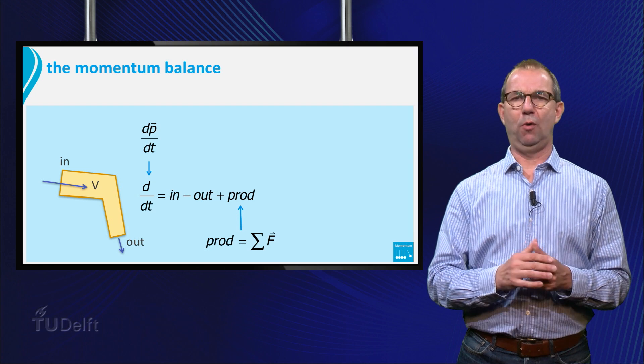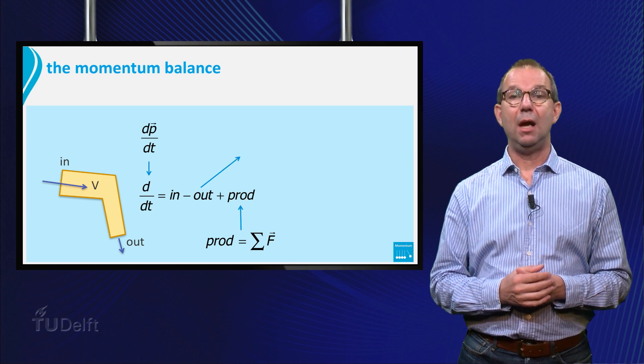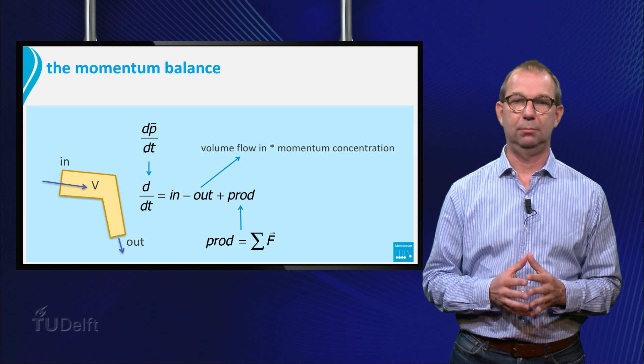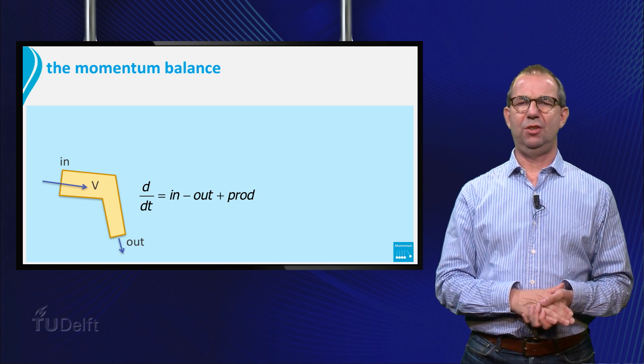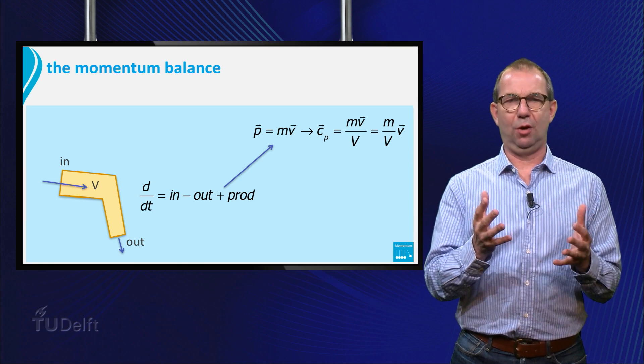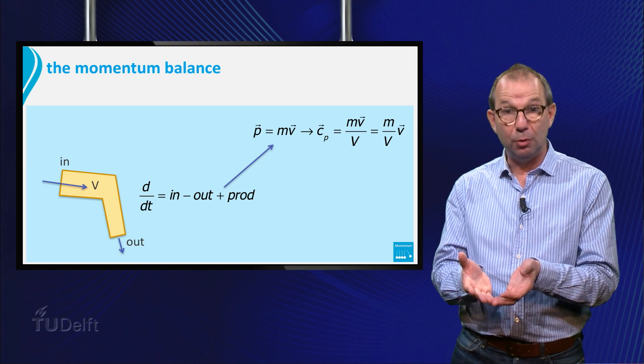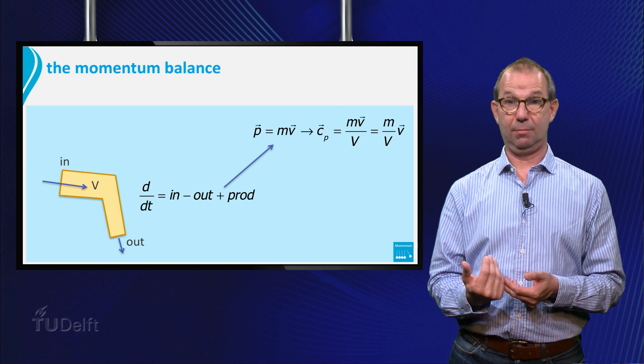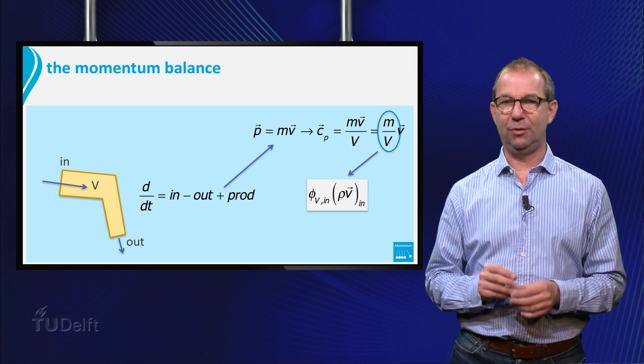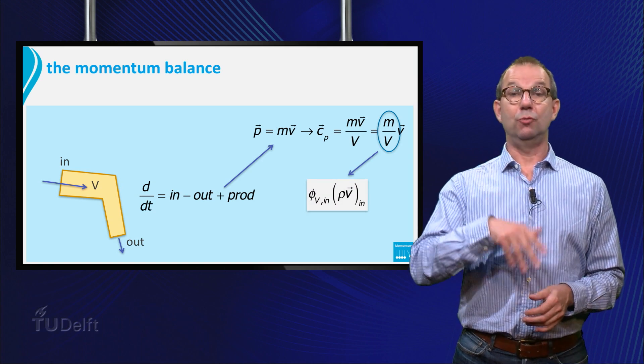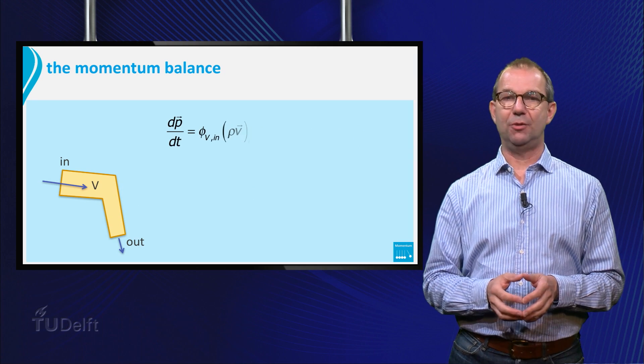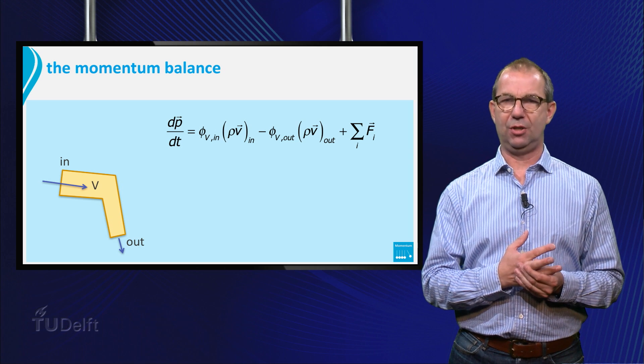How to model the in and out flow of momentum? In the usual way. That is, as a volume flow in times the concentration of momentum in the inflow. Hmm, concentration of momentum, what might that be? Momentum is mass times velocity. So concentration of momentum is momentum per unit volume, so mass over volume times velocity. But mass over volume is density. Thus we can write for the inflow of momentum volume flow in times rho V at the inlet. Similarly we can express the out flow of momentum as volume flow out times momentum concentration at the out flow.